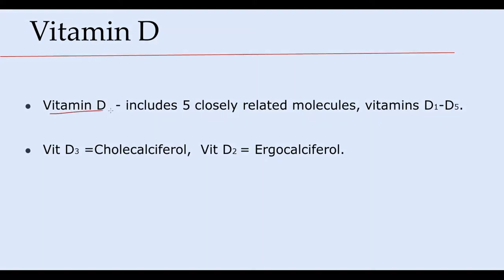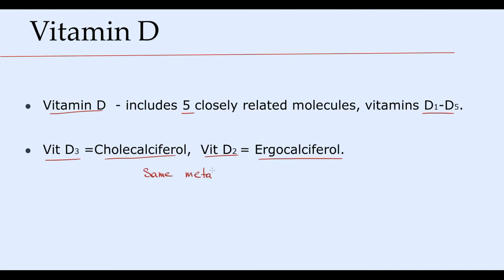Vitamin D is actually not just one molecule. In fact, it's a collective term that includes 5 closely related molecules called vitamin D1 to vitamin D5. But when we use the term vitamin D, we actually mean the two most important of them: vitamin D3, also called cholecalciferol, which is the natural form of vitamin D produced in the skin, and vitamin D2, also called ergocalciferol. Basically they have similar metabolic pathways, so transformations that occur with vitamin D3 are the same for vitamin D2 as well.